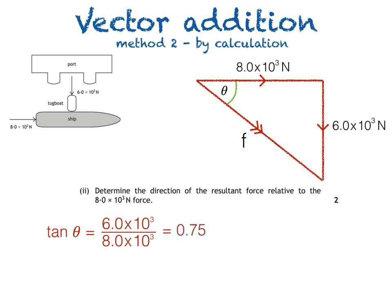So our angle θ = tan⁻¹(0.75) = 37°. And again, we should state that this is to the 8.0 × 10³ N force.